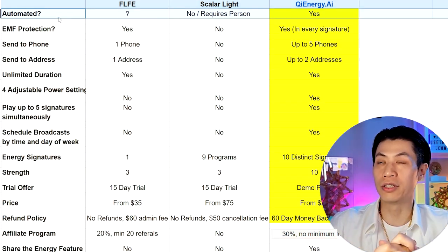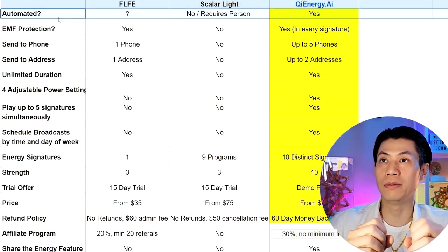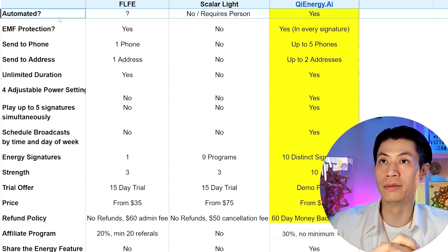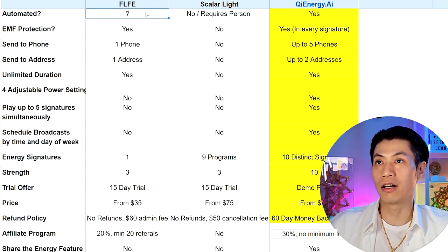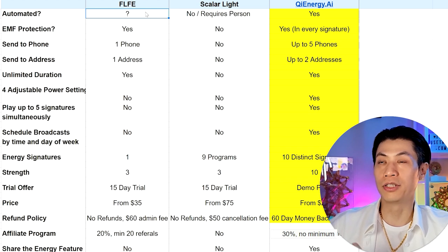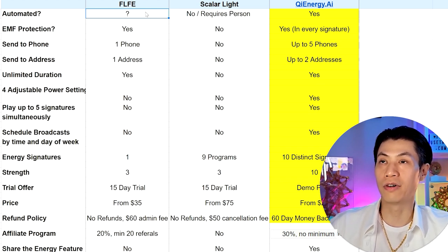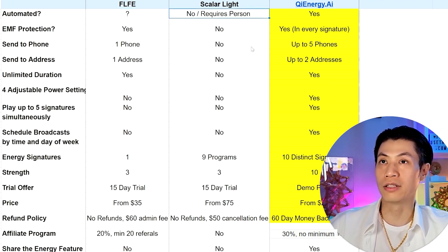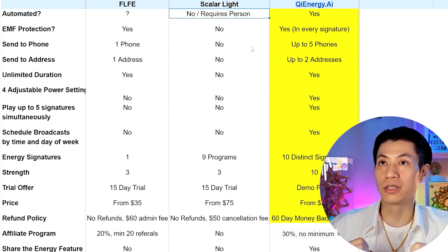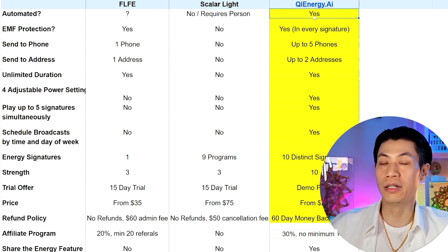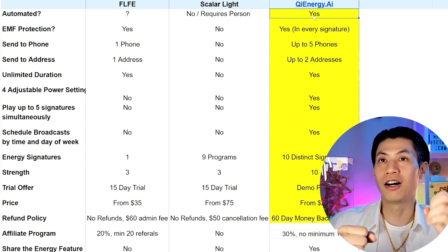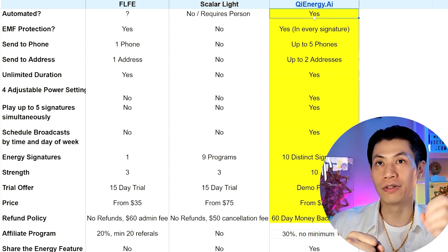First, let's talk about automation — is the service or the energy being sent to you in an automated way? With FLFE, it looks like it's automated, but I'm not sure. Scalar Light is not automated; it requires someone to actually schedule a time to send you that energy. Qi Energy AI is fully automated, set and forget.